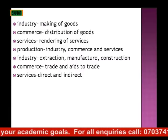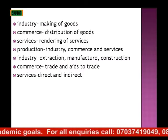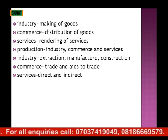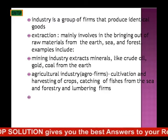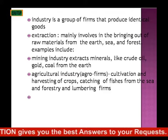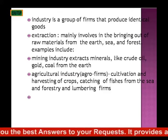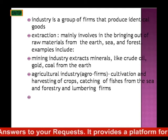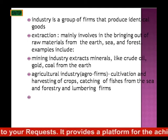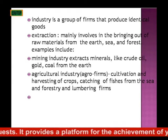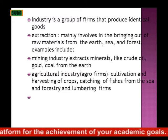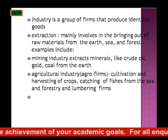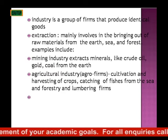Industry involves making of goods; commerce, distribution of goods; while services involve rendering of services. Industry is a group of firms that produce identical goods. Under it, we have extraction, which mainly involves the bringing out of raw materials from the earth, sea, and forest. Examples include the mining industry, which extracts minerals like wood, oil, gold, and coal from the earth.